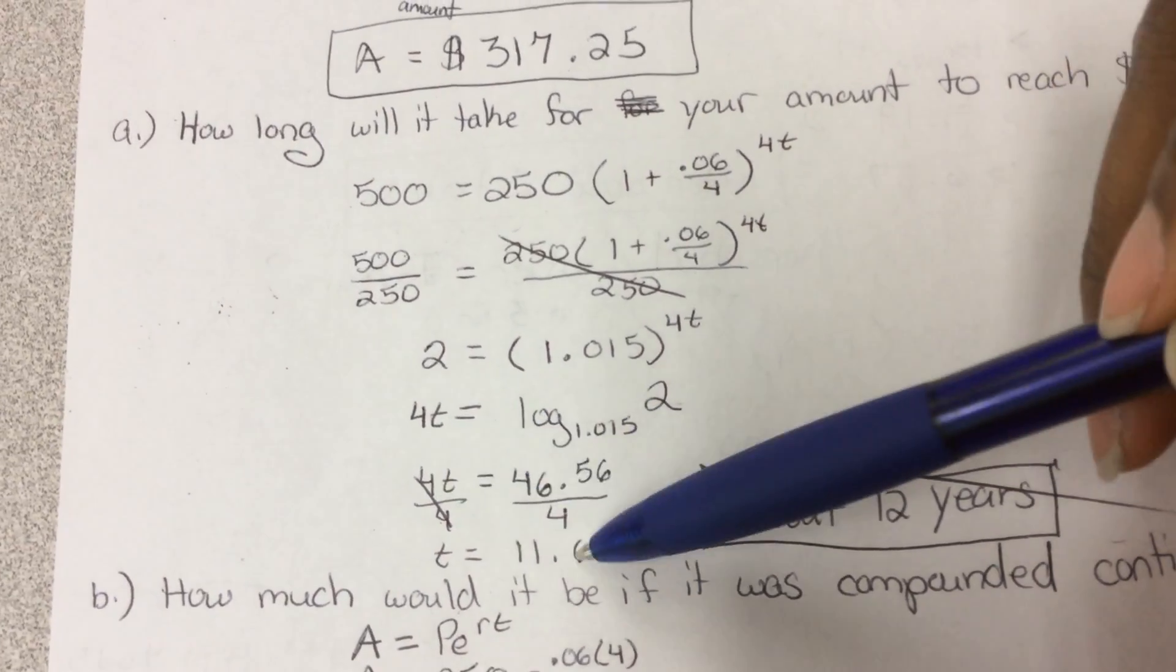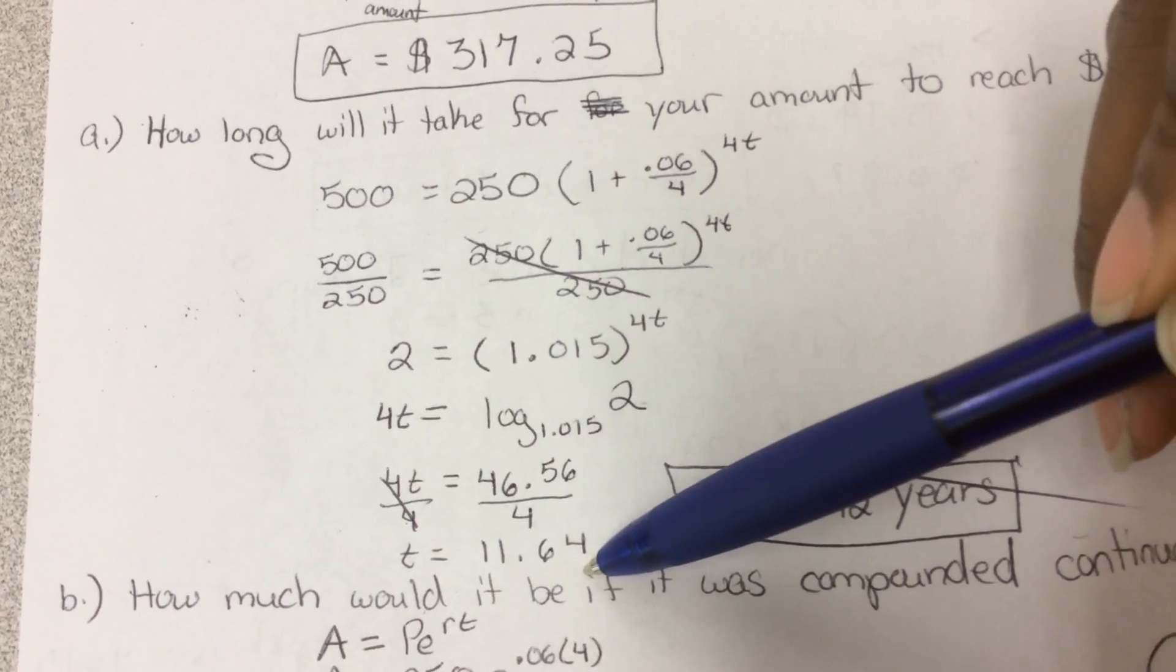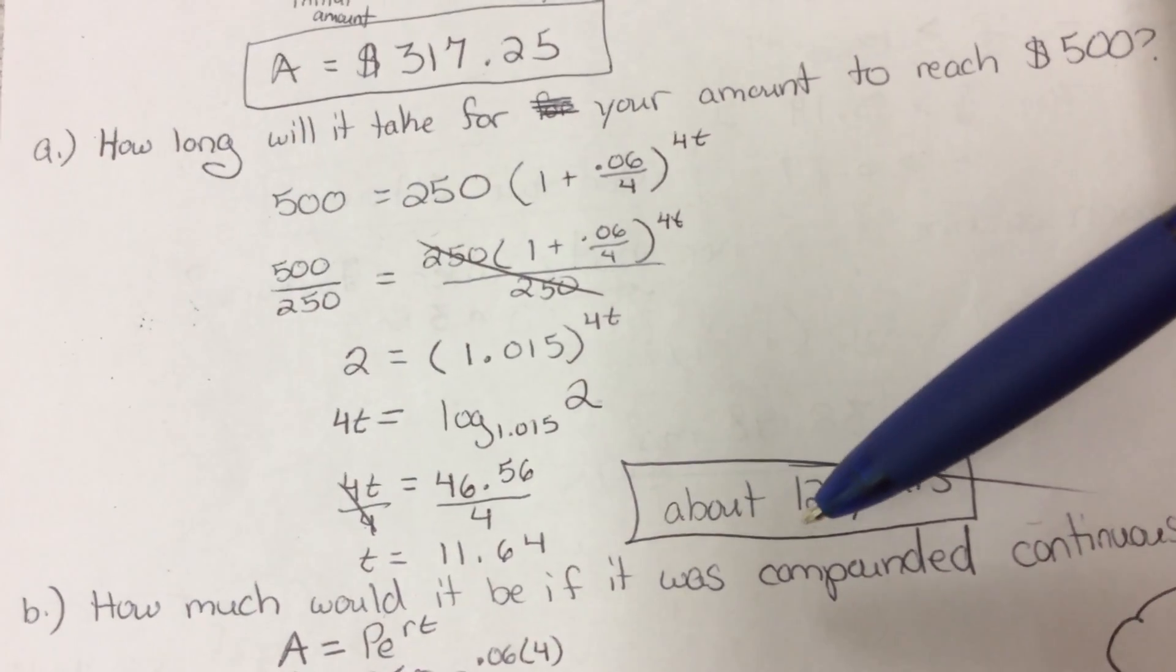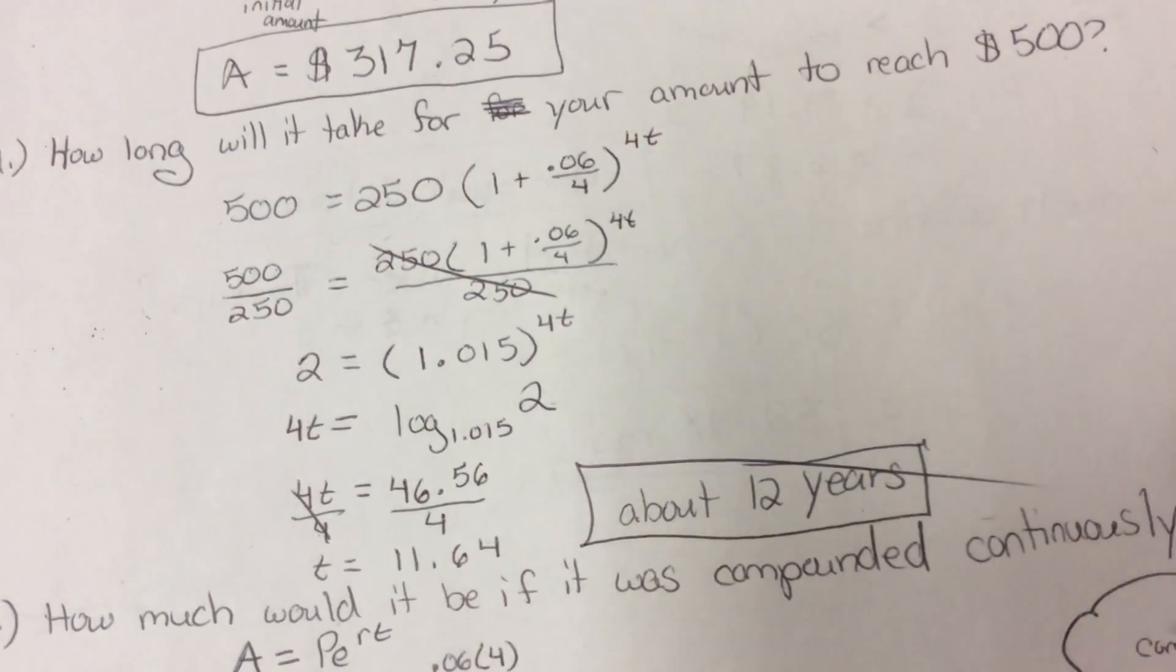Divide both sides by 4, and T equals 11.64. So I rounded up to approximate it to be about 12 years.